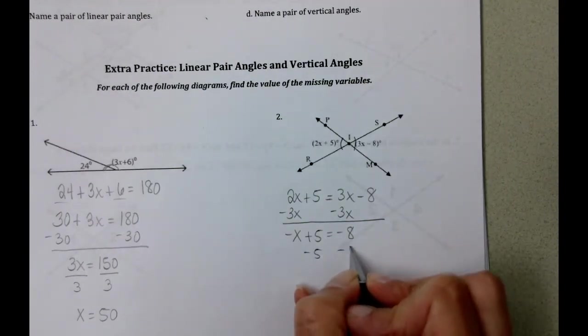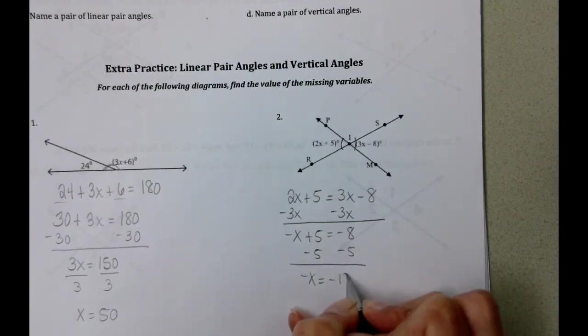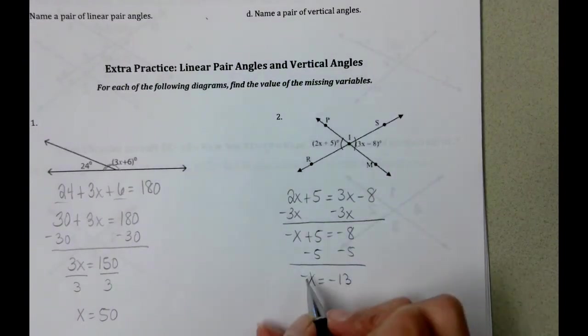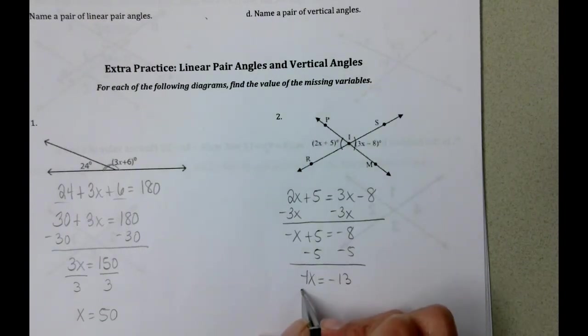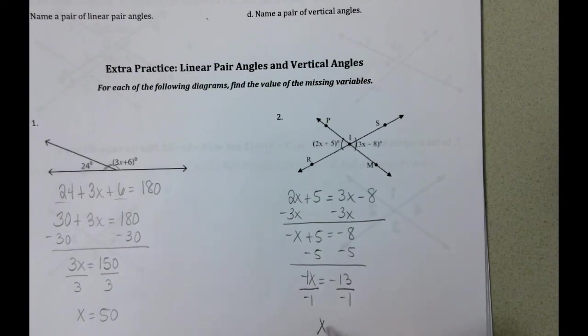We can subtract 5 from both sides. We get negative x equals negative 13. And then remember there's a 1 in front of here. So we're going to divide by negative 1 here. And divide by negative 1 here. And we get x equals positive 13.